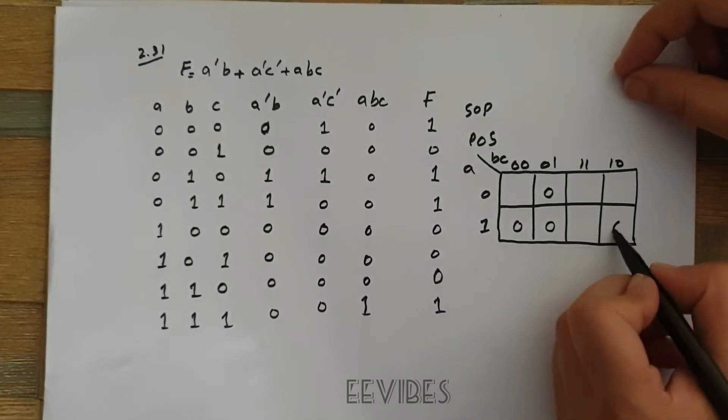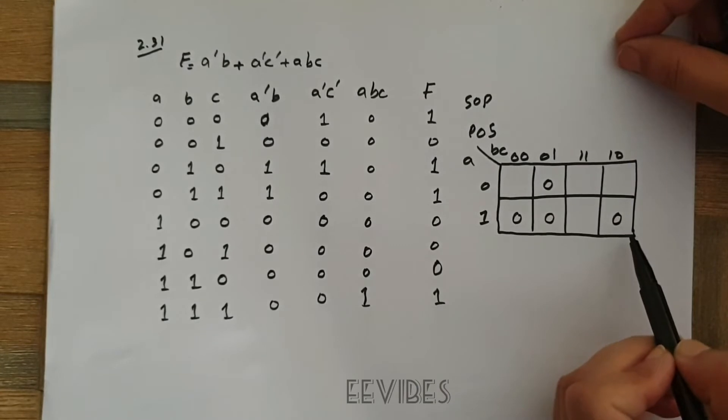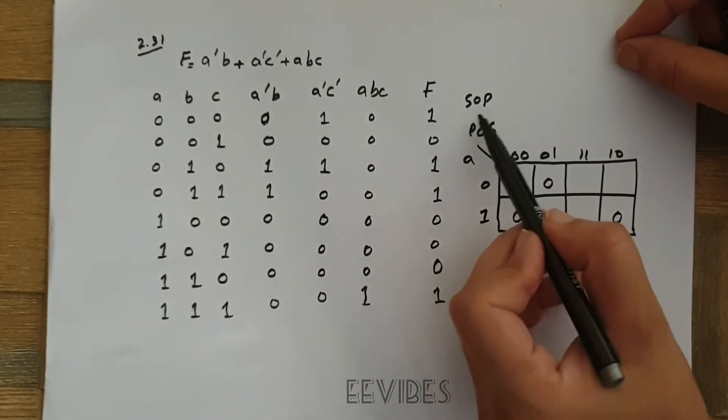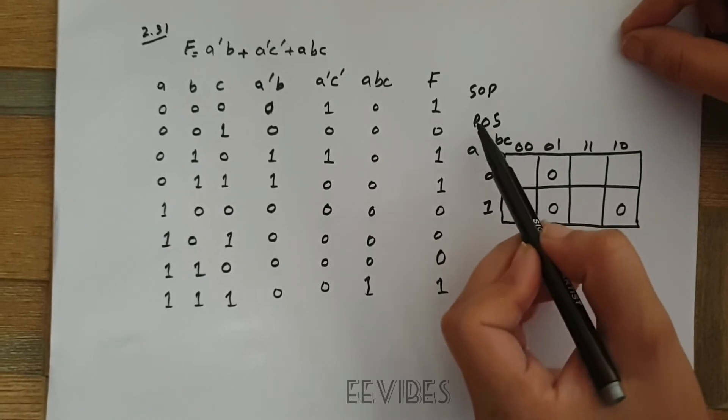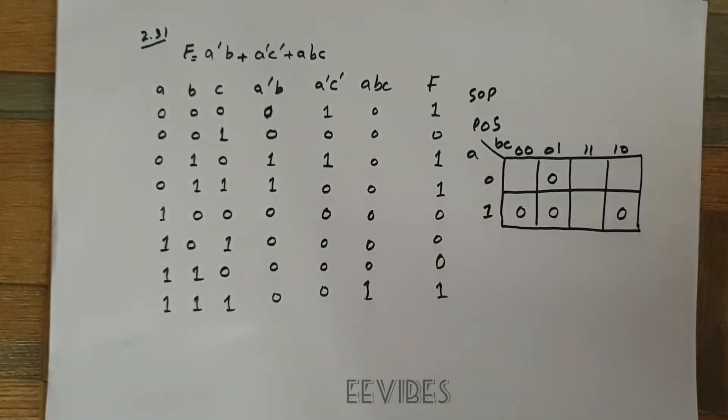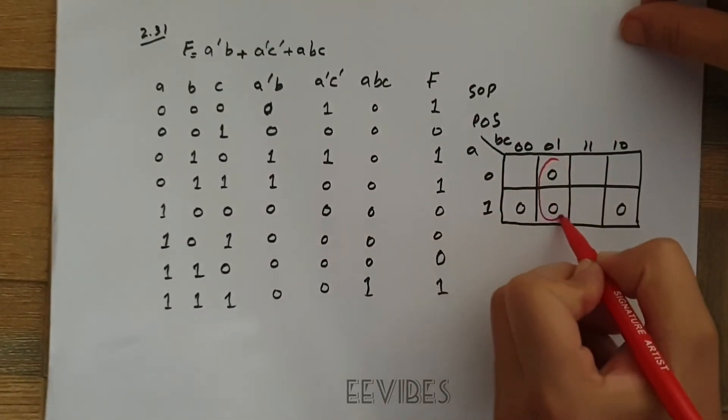Why I have placed 0 over here? Always remember that whenever you want to represent the function as the product of sums, you will place zeros in the K-map and then you will combine the adjacent squares. So let's just combine these adjacent squares.